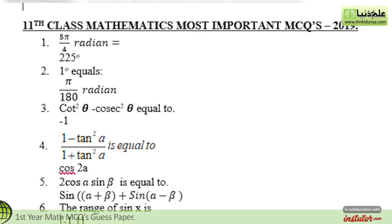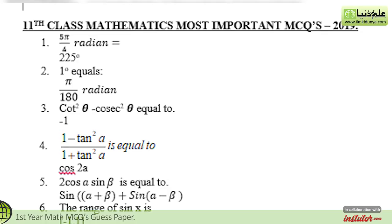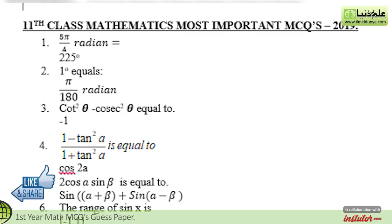The second statement is: 1 degree equals — the correct option is π/180 radians. There is an accurate answer given here. According to the correct options, the 3 incorrect options are not provided. If you have only the correct answers in mind, you can easily choose from the 4 options given. The third statement is: 4 cosec²θ minus cosec²θ equals — the correct option is minus 1.